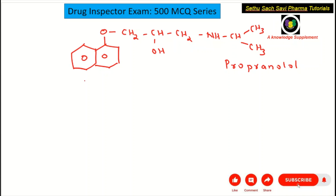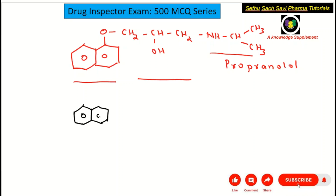To synthesize this compound, you need this part, this part, and also this part. For getting the aromatic ring part, you need to take the starting material which is naphthalene — two benzene rings fused together. Naphthalene containing an OH group at the first position or alpha position is called alpha naphthol. So one of the starting materials for the synthesis of propranolol is alpha naphthol.